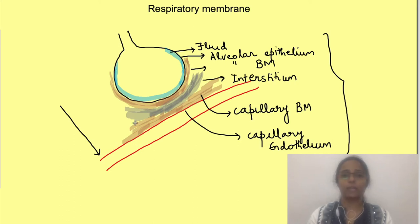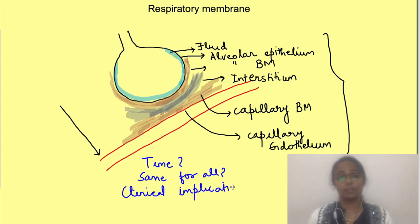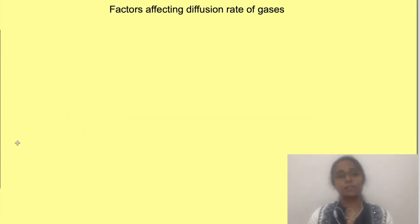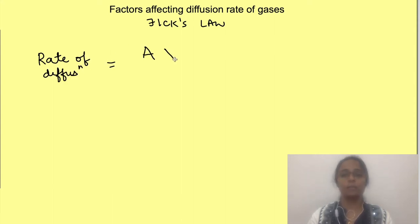It will take some time for gases to cross these layers. How much time will it take? Will that time be the same for all gases? Will there be any clinical implications if the respiratory membrane thickens? We will try to answer these questions in this video. The factors which affect the rate of diffusion of gases across any membrane are given by Fick's law, which states that rate of diffusion is directly proportional to the area of the membrane, the partial pressure gradient for the gas, and inversely proportional to membrane thickness.